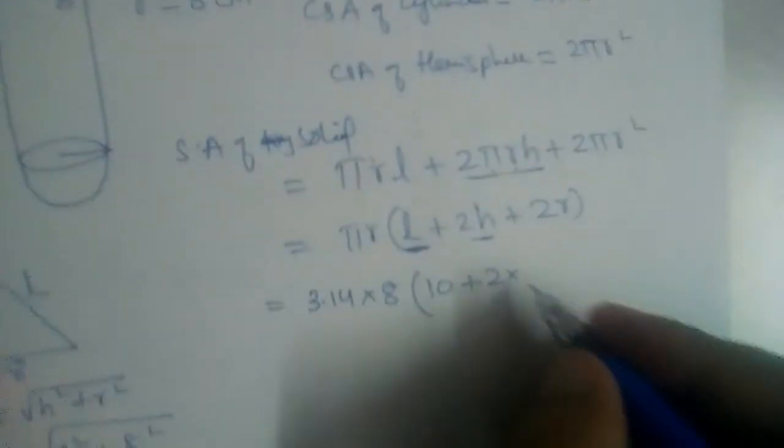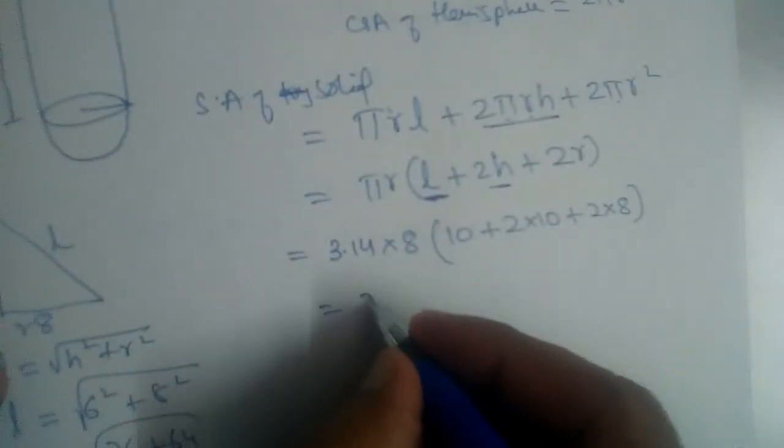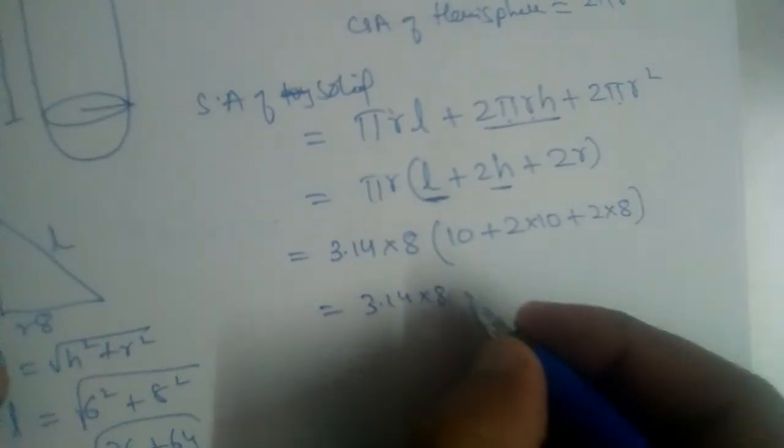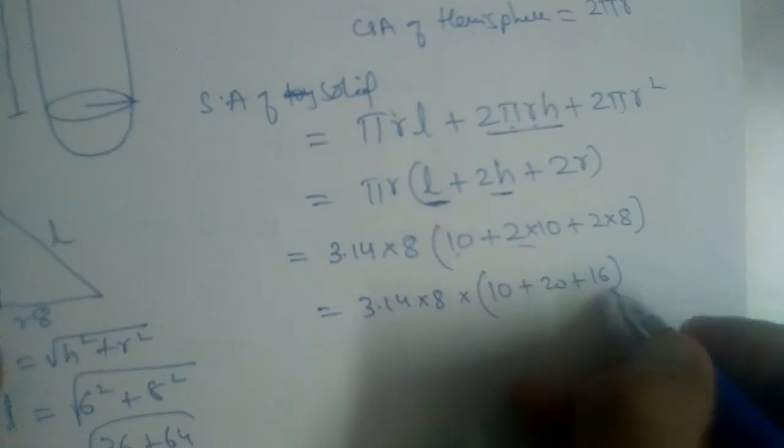2 into, this is cylinder, height of the cylinder is 10. 2 into 10 plus 2 into radius 8. So 3.14 into 8 into 10 plus 20 plus 16.